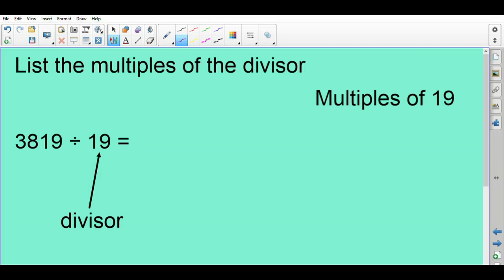So let's have a look at an example of this. Our first example is 3819 divided by 19. The divisor here is 19, that's the number we're dividing by. I don't know my 19 times tables, so I need to write out the multiples of 19.